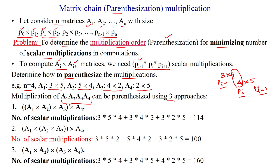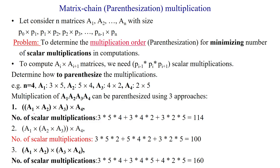In the first approach, among the four matrices, I multiply the first two matrices first, then multiply the result by the third matrix, then multiply all three results by the fourth matrix. When applying this kind of parenthesization to the given example, we get 114 scalar multiplications.